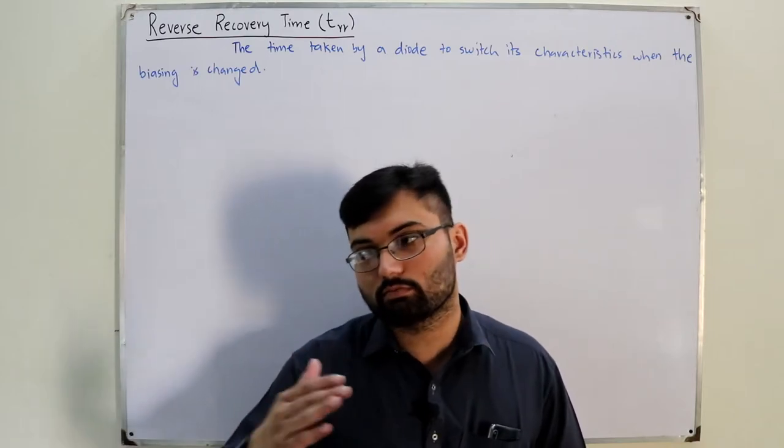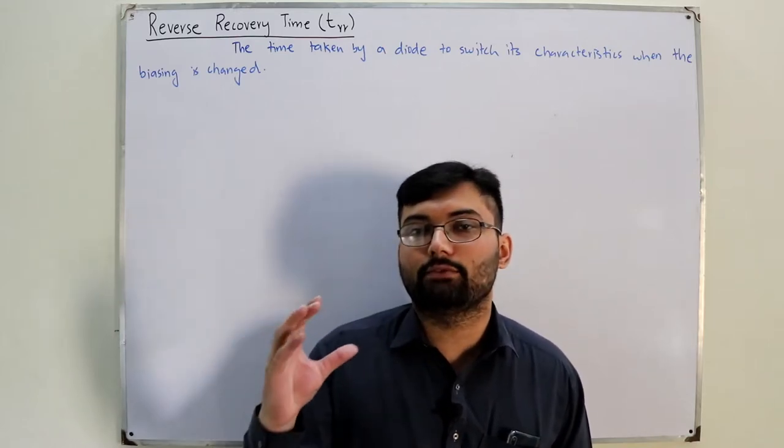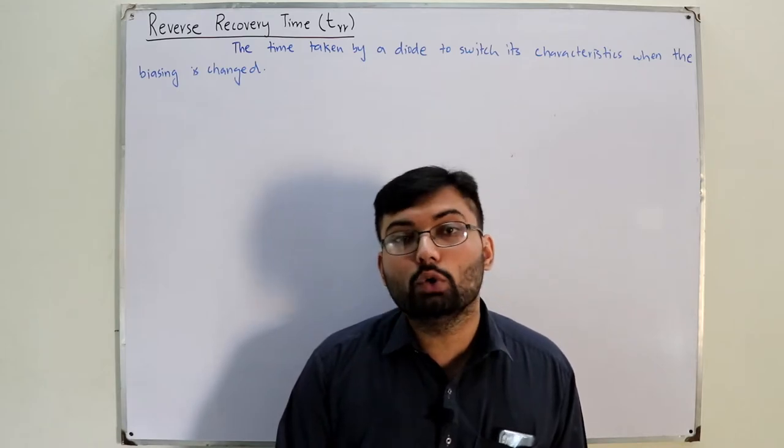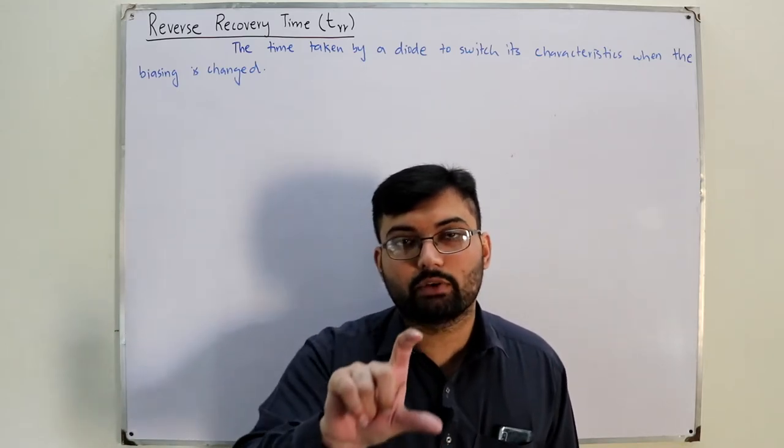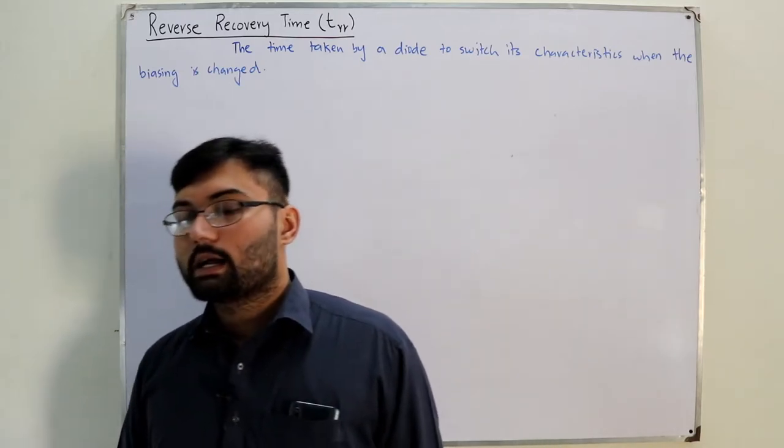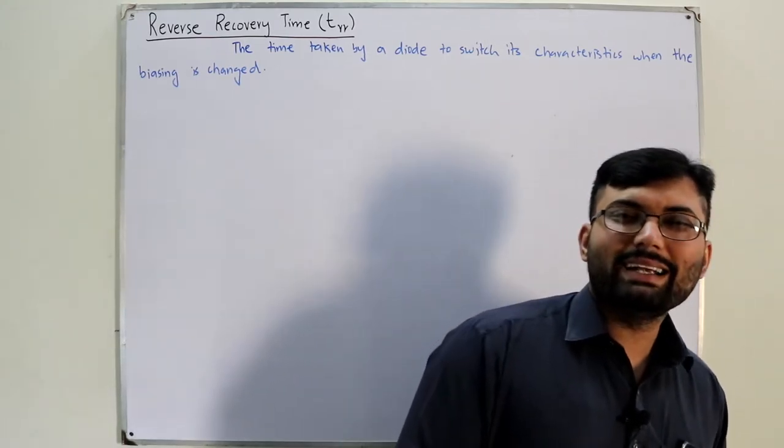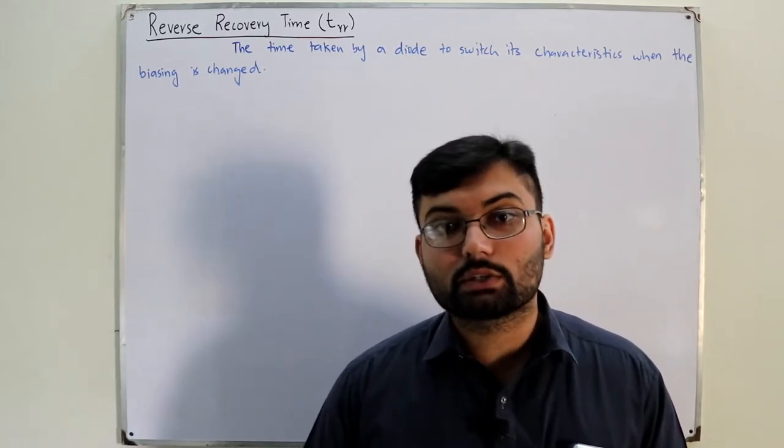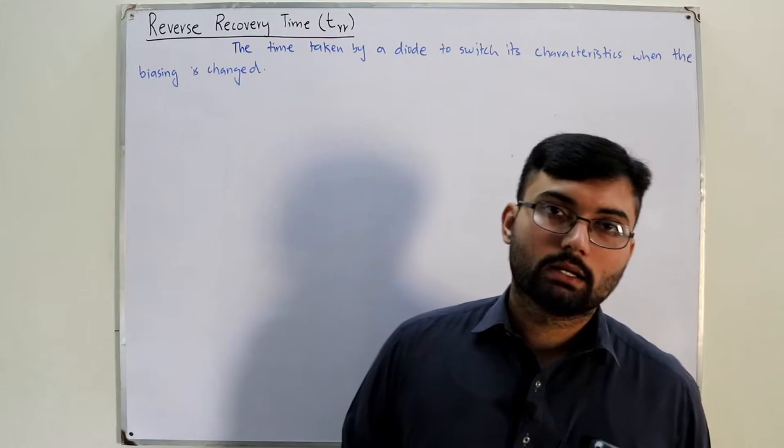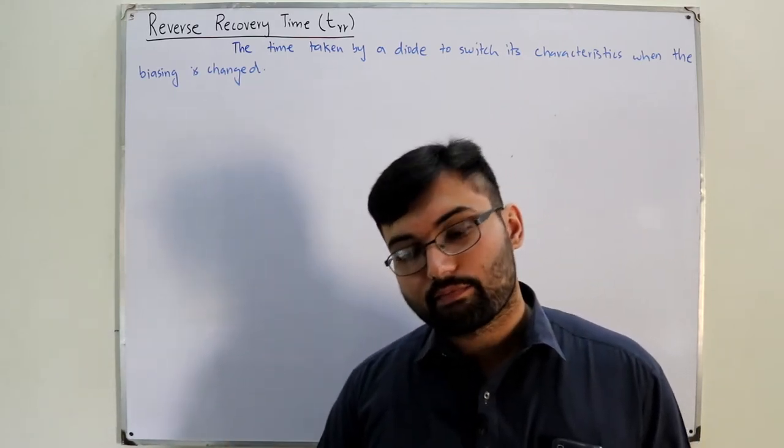When you have the basics, you know what current flows in the forward bias region, what current flows in the reverse bias. So if a certain current is flowing in the forward bias and you've already applied a forward bias potential, now if you switch the polarity of the battery, the external voltage source, you switch it to the reverse bias, you reverse bias your diode. Will the current directly drop to zero? Will it directly drop to some range of micro or pico amperes? No.